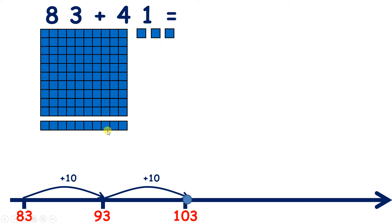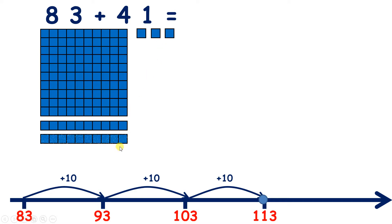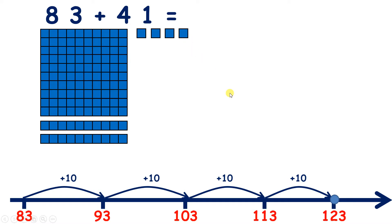If we add another 10, we're now on 113, because we have 100, 110, and 3 units. And now when we add our fourth 10, we have 123. So we've added four 10s — we've added 10 four times — so we just need to add one unit, and that takes us to 124, so that's our answer.